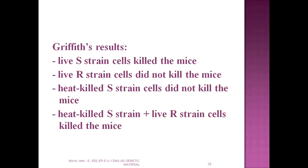In the next part, he took heat-killed smooth strain and heat-killed smooth plus rough strain. Heat-killed smooth strain cells did not kill the mice, because the outer layer was destroyed, so it did not infect them. Then he combined heat-killed smooth strain with live rough strain — the smooth strain was heat-killed and the rough strain was live — and this combination killed the mice.